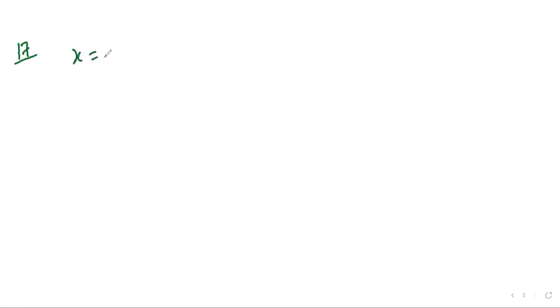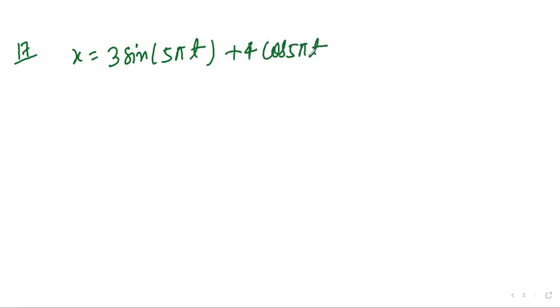Next is question 17. The displacement of a particle is given by: x = 3 sin(5πt) + 4 cos(5πt). You have to find the amplitude A. This question appeared in 1999.